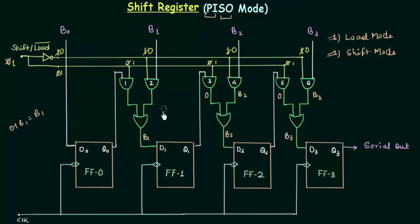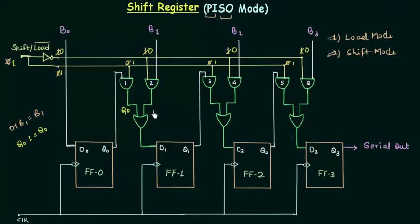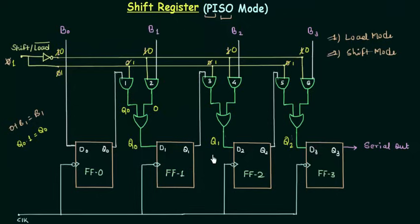For AND gate number 1, the other input is Q0 and the first input is 1, so Q0 AND 1 gives us Q0. AND gate number 2 will have output 0. So the OR gate gives us Q0. For the next combinational circuit we similarly have Q1, and for the one after that we have Q2. So the data stored in flip flop number 0 is shifted to flip flop number 1 — Q0 was the output and now it acts as the input to D1. In the same way Q1 acts as input to D2, Q2 acts as input to D3, and whatever is stored in the third flip flop is now the output Q3.